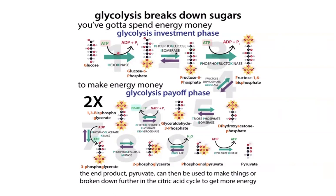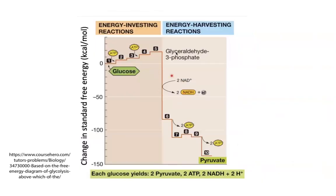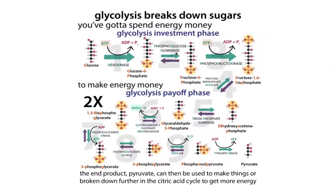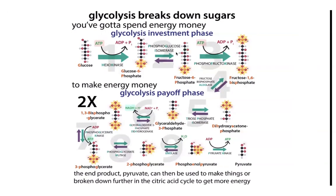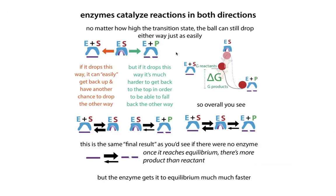These are the ones that are super far from equilibrium. These are the points we're going to want to regulate — the go or no-go points, the points of commitment. But a lot of the time the free energy differences aren't that much, and when you're near equilibrium, slight changes in concentration can have a big effect on what direction things go. Because enzymes can catalyze things in both directions — they only let you reach equilibrium faster.